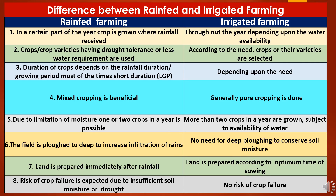Now to study the difference between rain-fed and irrigated farming. First, rain-fed farming is done in a certain period of the year when rainfall is received, while in irrigated farming, crops are grown throughout the year depending on water availability. Second, in rain-fed farming, crops and varieties are selected having drought tolerance and less water requirement, while in irrigated farming, crops are grown according to need as there is no constraint of irrigation.